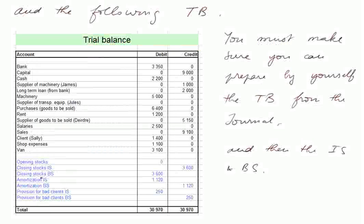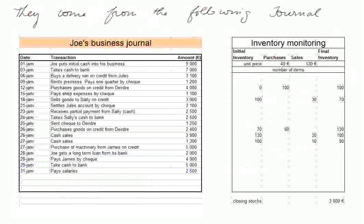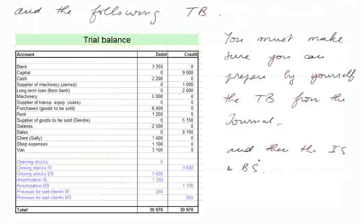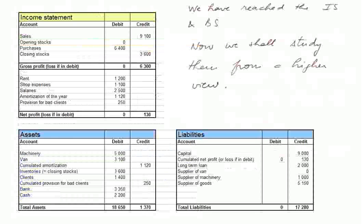These numbers do not come automatically from the journal. You have to decide the amortization schedule of the van and the machinery, and you have to decide how much provision you shall pass for bad clients. You must make sure that you can prepare by yourself this trial balance from the journal, and from this trial balance, you must make sure that you can prepare by yourself the income statement and the balance sheet.